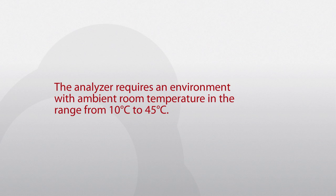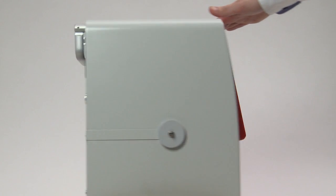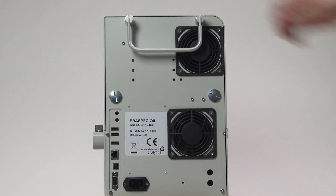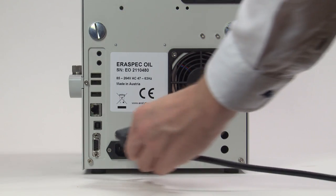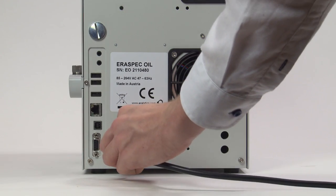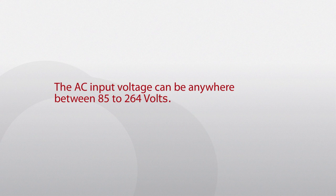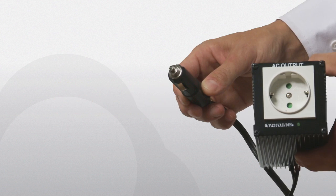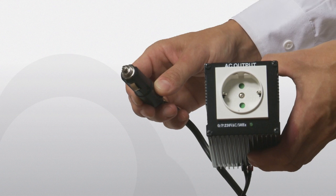Turn the instrument on and connect the power cable to the plug on the rear side of the instrument. The AC input voltage can be anywhere between 85 and 264 volts. If the instrument is used in mobile laboratories or in the field, it can also be operated at 12 volts DC using a DC-AC converter.